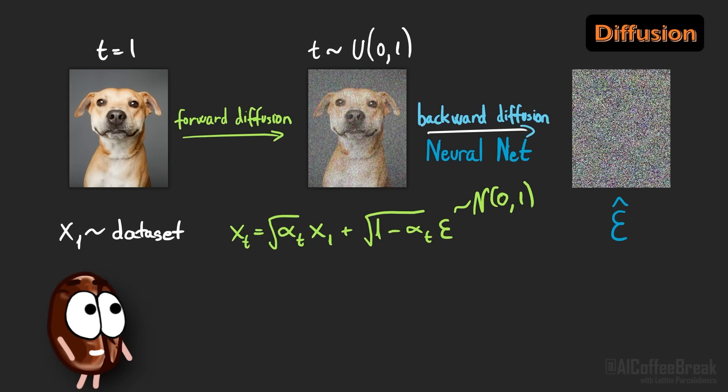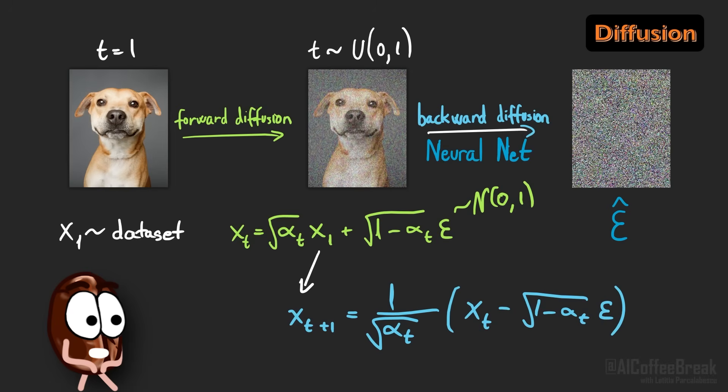And then, we can use this powerful neural network model that has learned to predict noise epsilons from any image to do useful stuff with it, like generating clean images. How? We use the epsilon predicted by the network to reverse the diffusion process. That means we take the formula we used for adding noise and rearrange it to solve for the clean image instead.